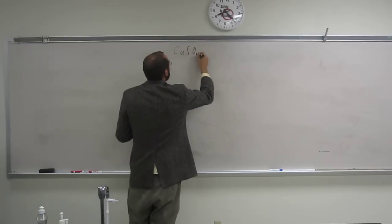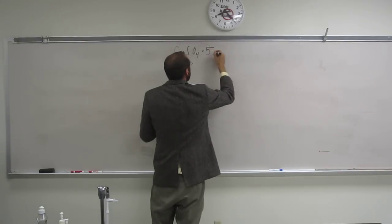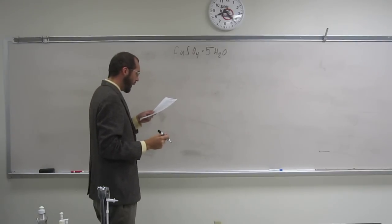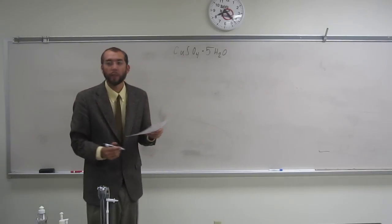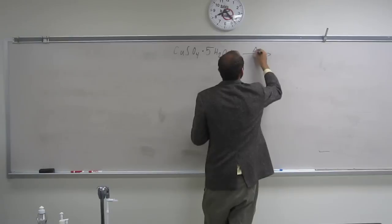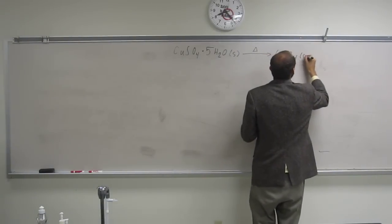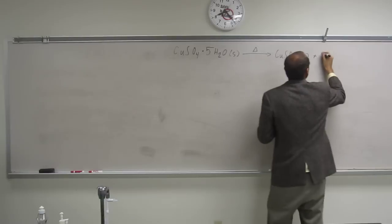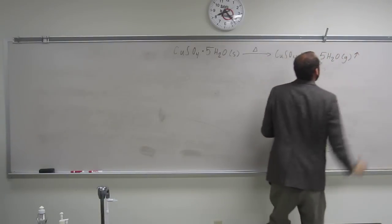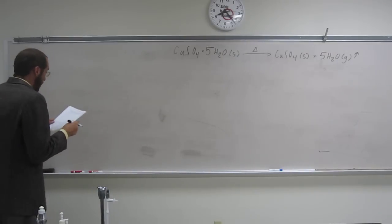So copper sulfate, and then remember, pentahydrate is going to be penta is 5, and hydrate, of course, is water. And it also tells us that they heated strongly. So let's write that chemical equation. We should be pretty good at these by now. And this goes away.